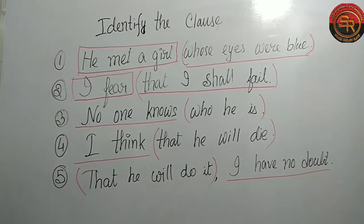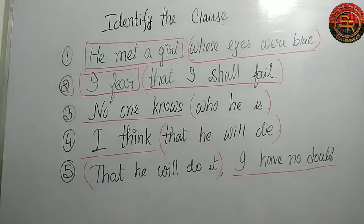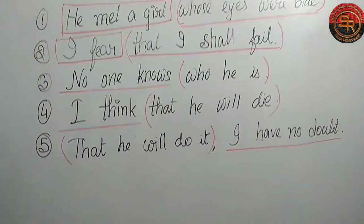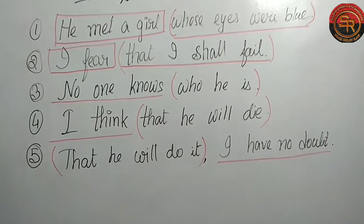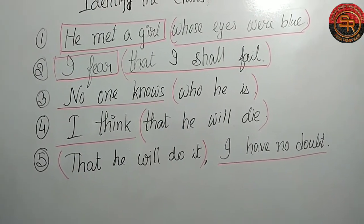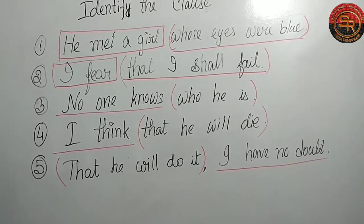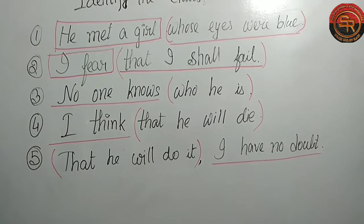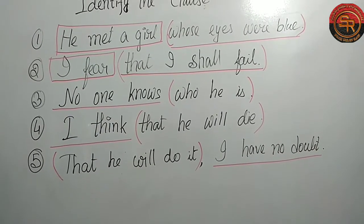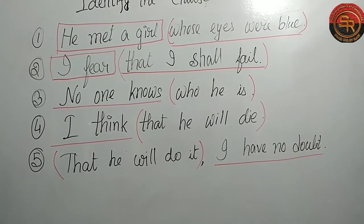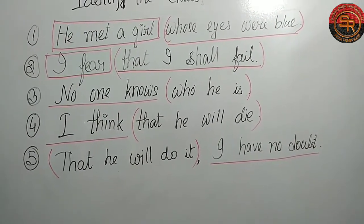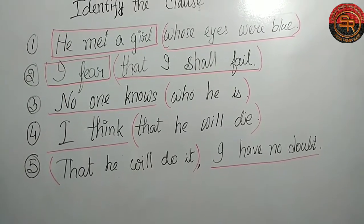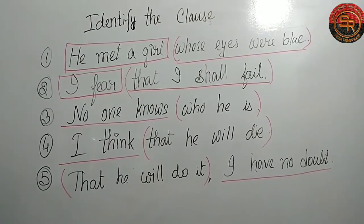Now look at the last question, question number five: 'That he will do it, I have no doubt.' This is actually a twisted sentence. Rearranged, it reads: 'I have no doubt that he will do it.' So 'I have no doubt' is our principal clause.